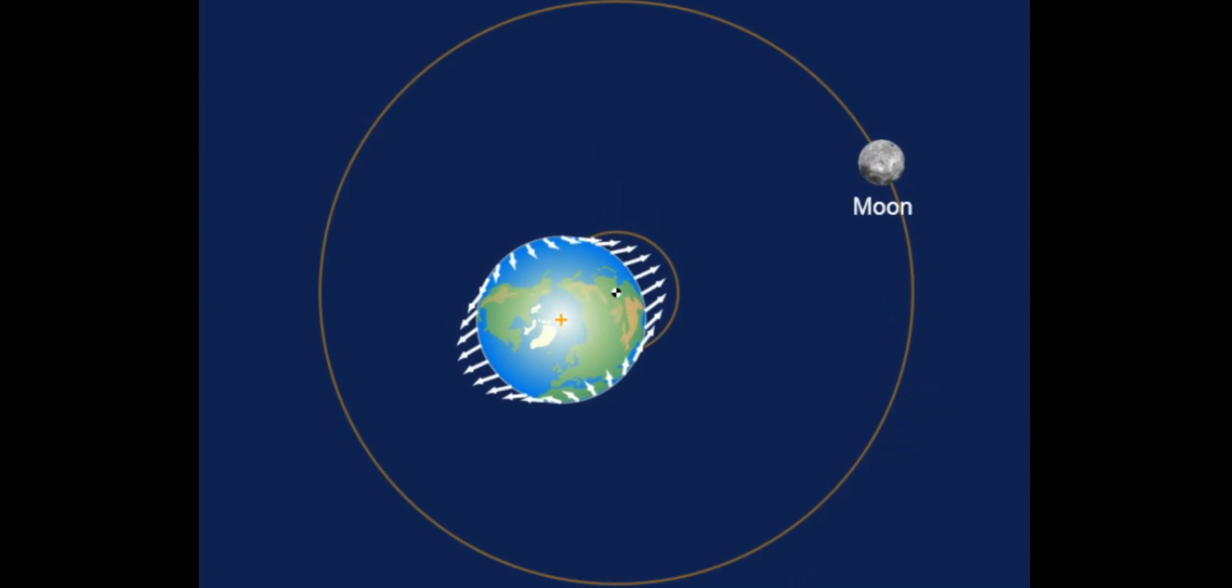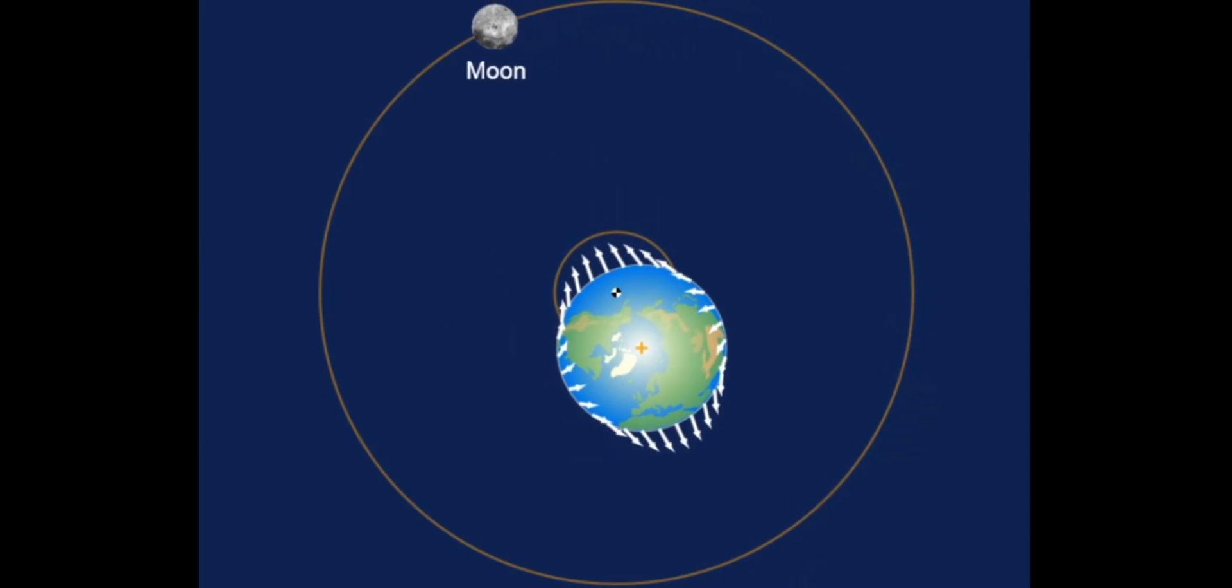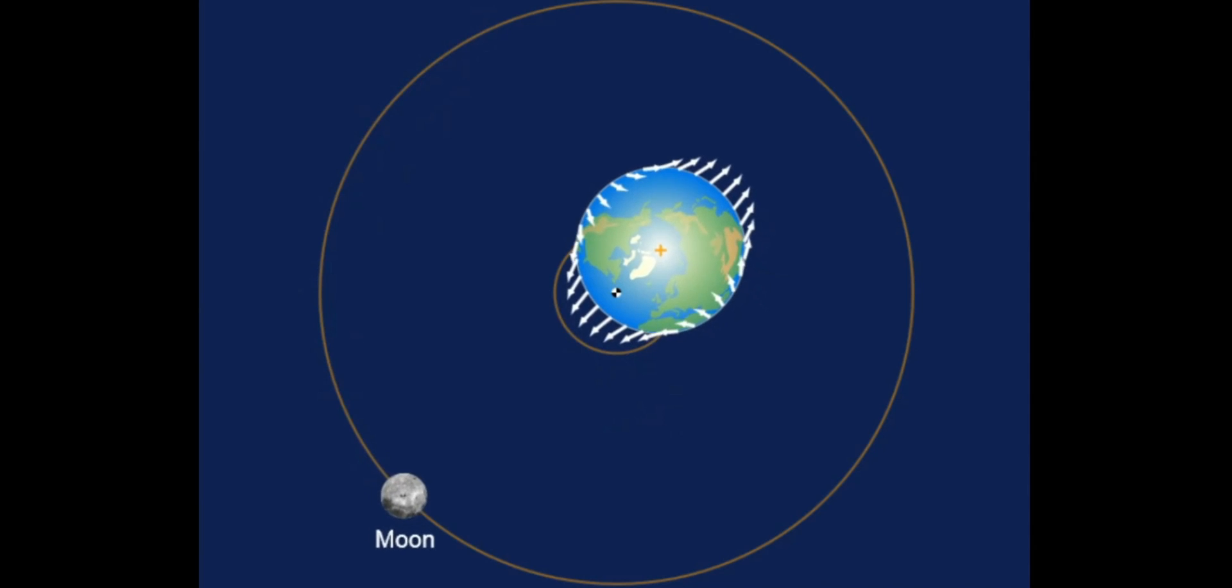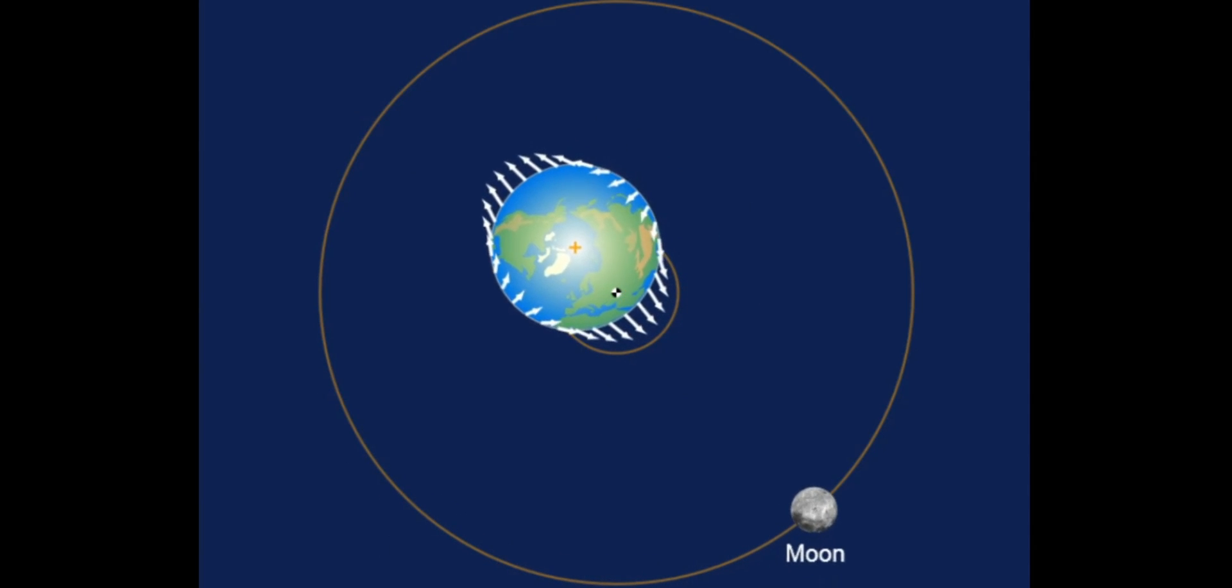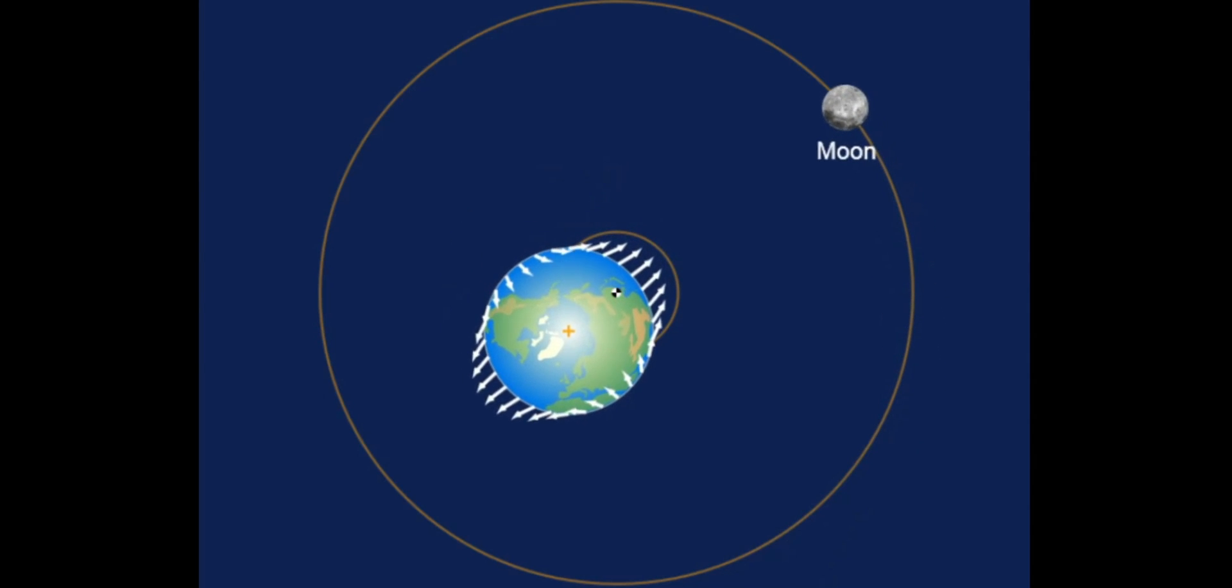When you sum up all the gravitational effects of the moon, the earth itself, and the sun, what you get is those little white arrows, the tidal vectors. And as you can see, it's quite obvious why you get two low and two high tides. However, it's not important for this video. The point is just that you get a high tide on the side facing the moon and a high tide on the face opposite.